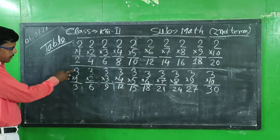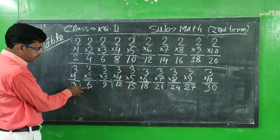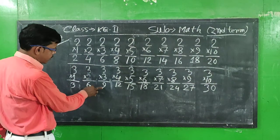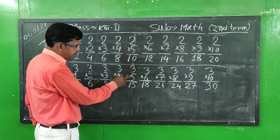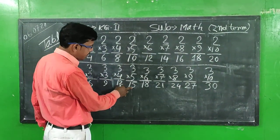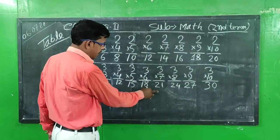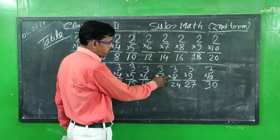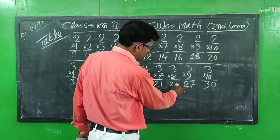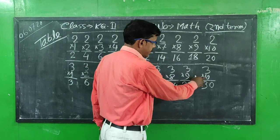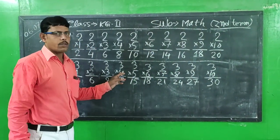Table number 3. 3 into 1 is equal to 3. 3 into 2 is equal to 6. 3 into 3 is equal to 9. 3 into 4 is equal to 12. 3 into 5 is equal to 15. 3 into 6 is equal to 18. 3 into 7 is equal to 21. 3 into 8 is equal to 24. 3 into 9 is equal to 27. 3 into 10 is equal to 13. Okay? Namaskar.